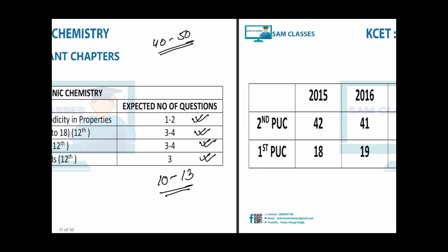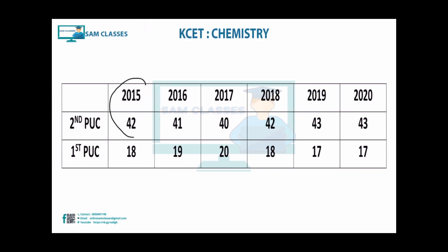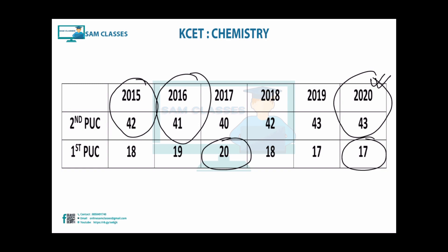For overall strategy: the second year syllabus holds the highest weightage from 2015 to 2020 - around 40 to 43 marks minimum. First year holds around 17 to maximum 20 marks. So the second year is the most important part. In terms of order of study, start with physical plus organic first. Once done, add the important inorganic topics. After completing all three, you can confidently solve papers.